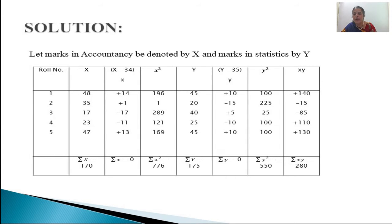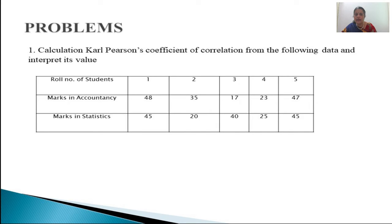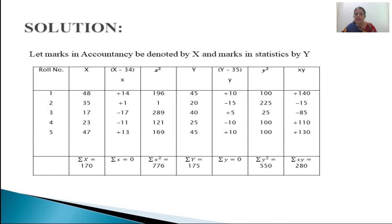The roll number column can be neglected — it has no value for our calculation. Set up the table with the x column (marks in accountancy) as given, then small x (x minus x̄), then x squared, then the y column (marks in statistics), then small y, small y squared, and the last column xy — the product of deviations. You need to start by computing the arithmetic means x̄ and ȳ.